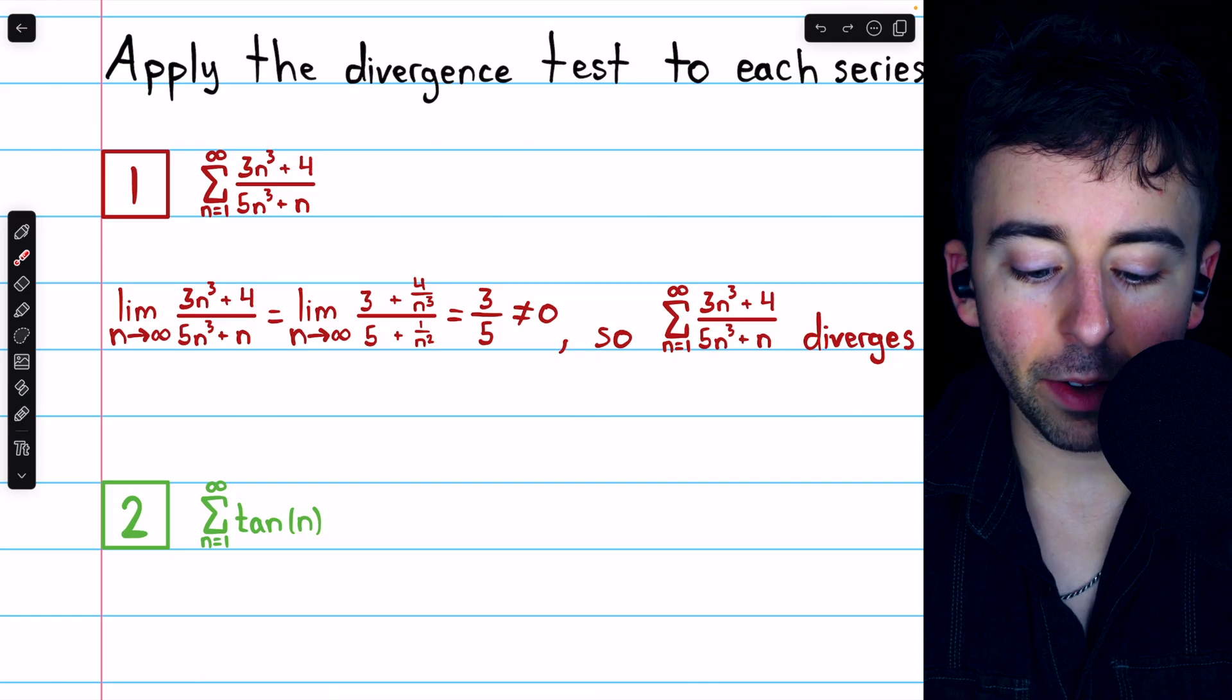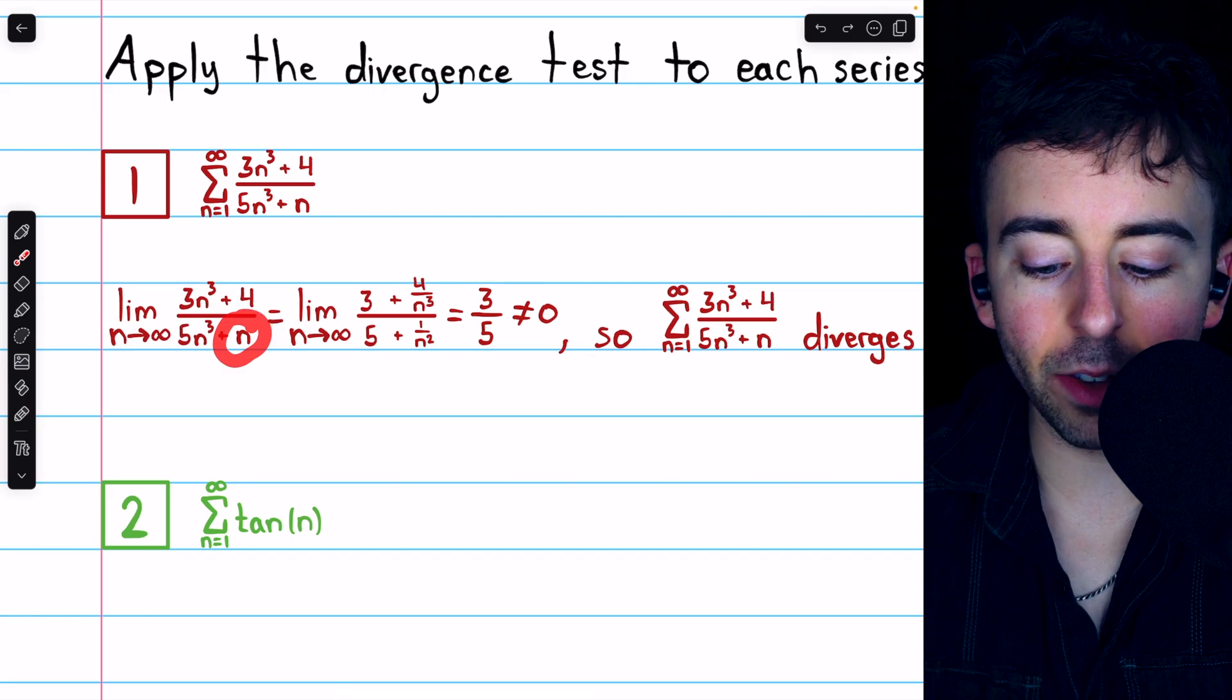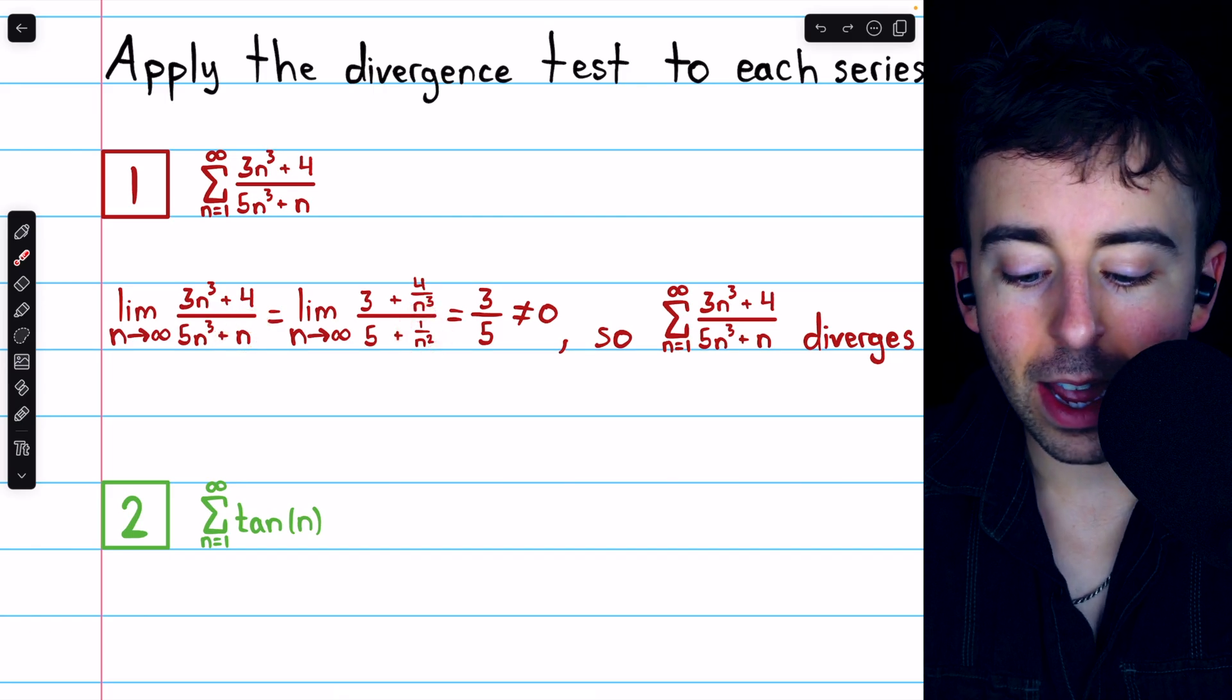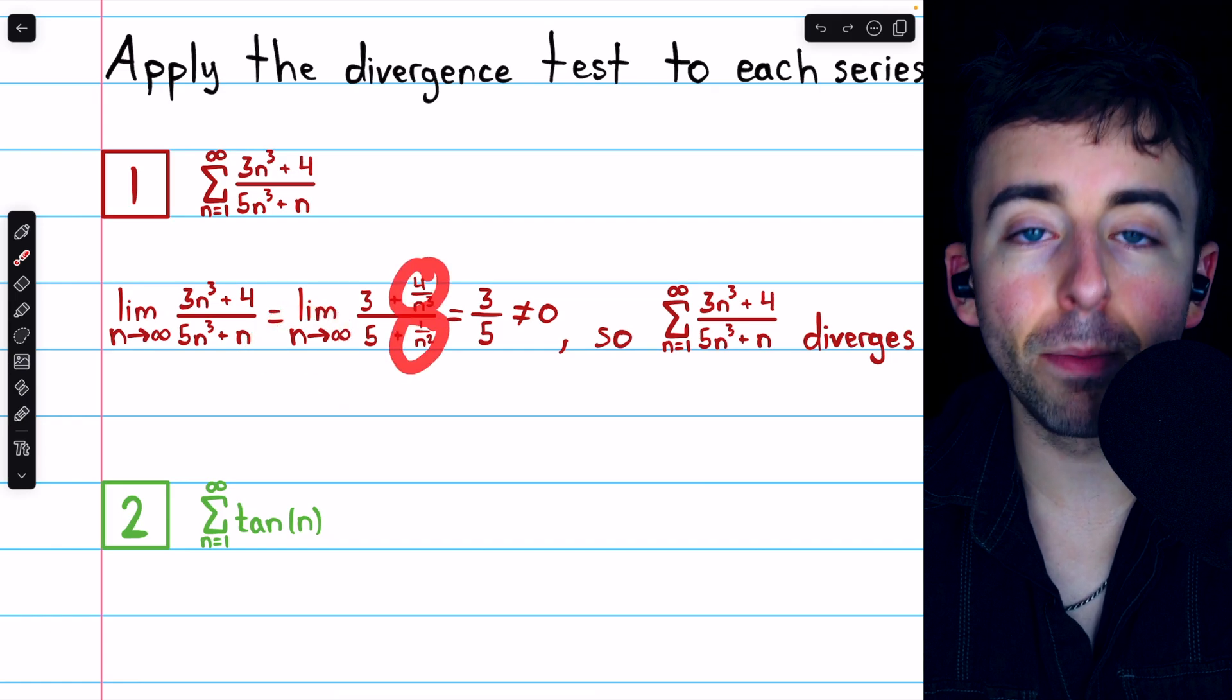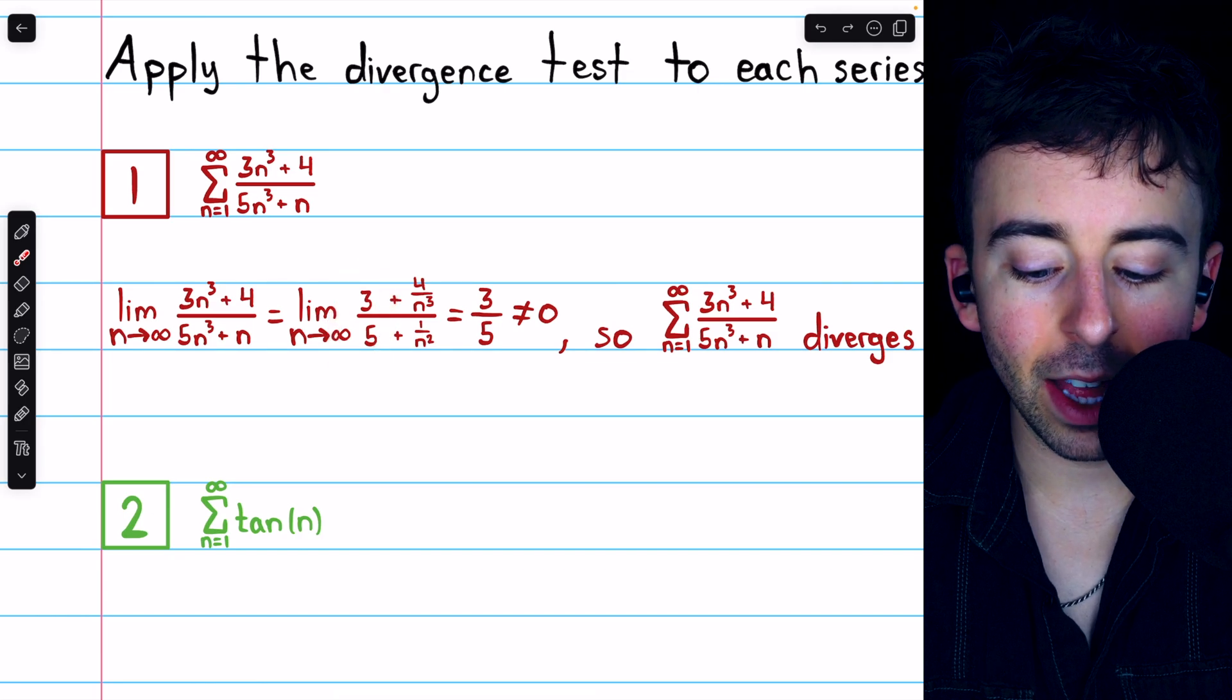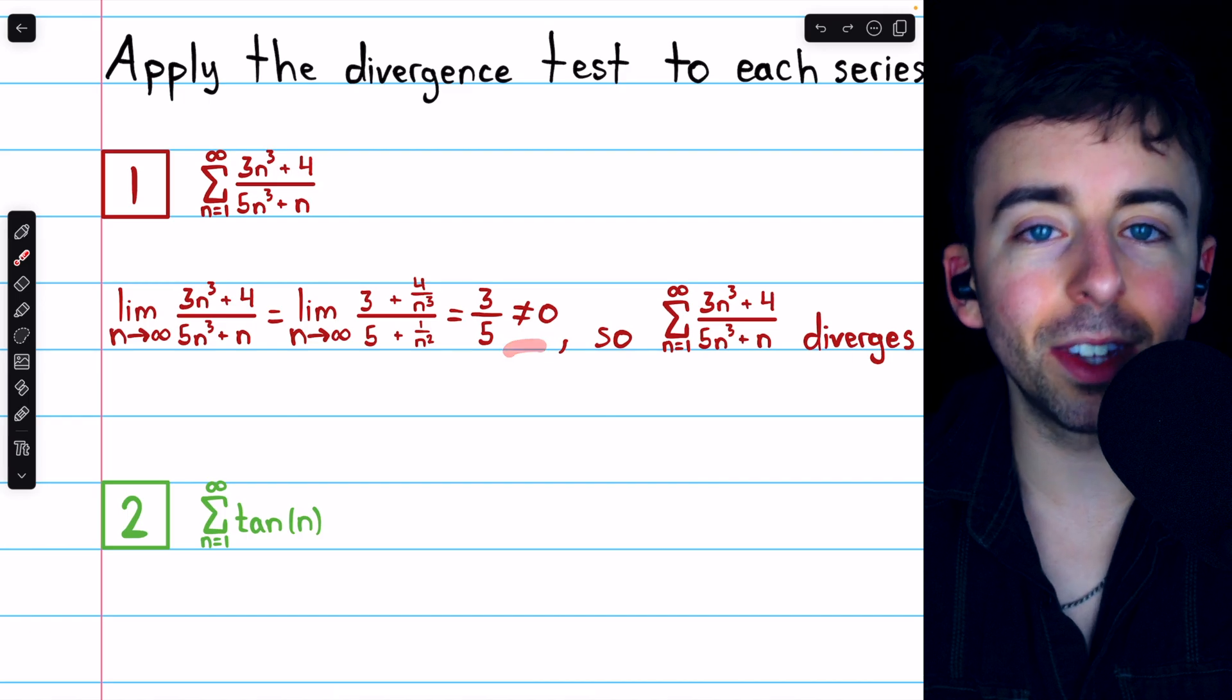In the denominator, 5n cubed divided by n cubed is 5, and n divided by n cubed is 1 over n squared. Now as n goes to infinity, this and this both approach zero. So all that's left is 3 over 5. Then we see the limit is 3 over 5, which is not equal to zero.